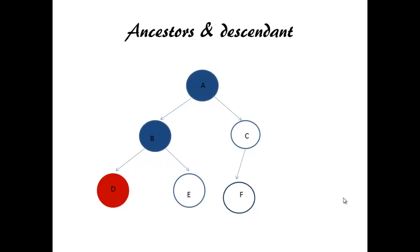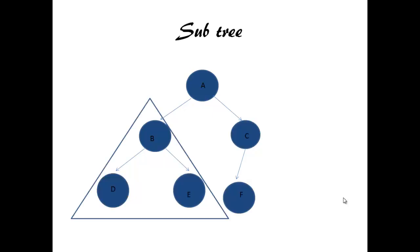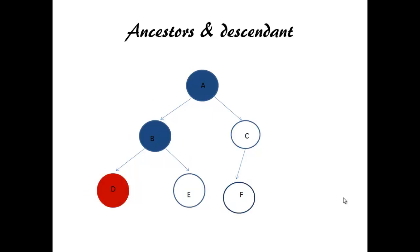Ancestors and descendants. We will see ancestors. Our ancestors are parents, grandparents, great-grandparents. Similarly, ancestors for D is A and B. Now, we will see about descendants. Child, grandchild are descendants. So, B and D are descendants for A.